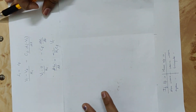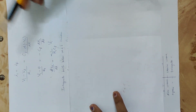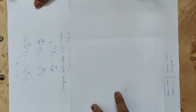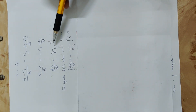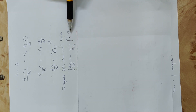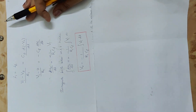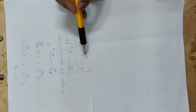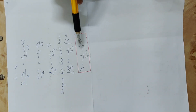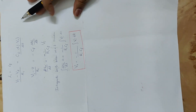To find VO, we integrate both sides with respect to time. The integral of dVO by dt gives VO, and integrating the right side gives the integral of Vi dt. The final equation is: VO equals minus 1 divided by R1 into CF, multiplied by the integral of Vi dt.